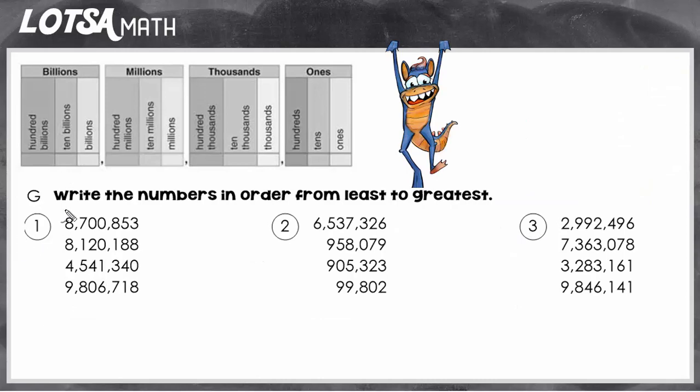For number one, they're already written out vertically for me, so that makes it really easy to see. I can see that they're lined up and I can compare the greatest place values first. Since they all have the same number of digits, I'm going to start by comparing the greatest place value.